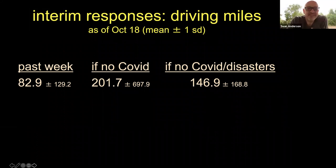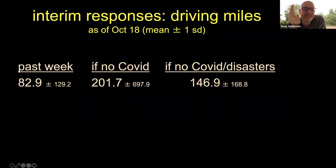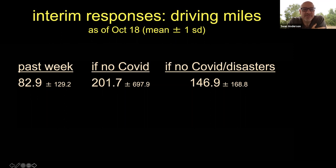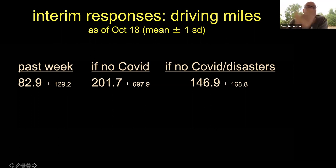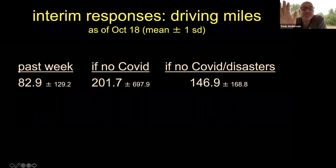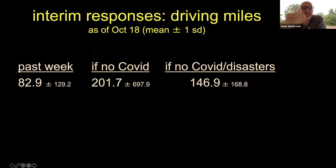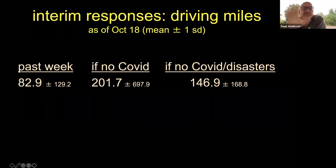There are about 160–170 responses so far. Our ideal goal is around a thousand, so we're about 20 percent of the way there, which isn't horrible. This is purely interim, so it'll be interesting to see if these initial trends hold as we get more results. This is aggregate data — you might be curious to look at people in different counties or age brackets, but this is everybody together as a gross whole.